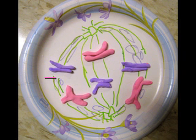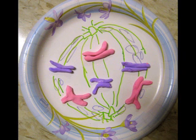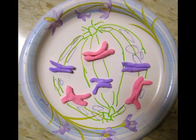Next is prometaphase, in which the nuclear envelope fragments and the microtubules extending from each centrosome can now enter the nuclear area. In this phase, the chromosomes condense more and each of the two chromatids of the chromosome have a kinetochore, which is a specialized protein structure at the centromere.